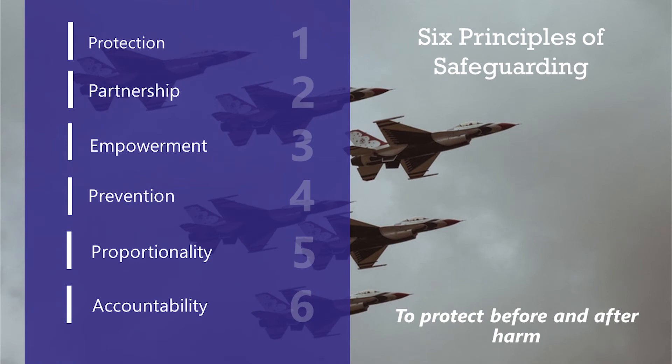Safeguarding now encompasses six key concepts. Protection — support and representation for those in greatest need. Partnership — local solutions through services working with their communities, which have a massive part to play in preventing, detecting and reporting neglect and abuse. Empowerment — people being supported and encouraged to make their own decisions and give informed consent. Prevention — it's better to take action before harm occurs. Proportionality — the least intrusive response appropriate to the risk presented. And finally, accountability — accountability and transparency in safeguarding practice.